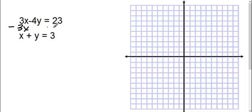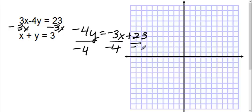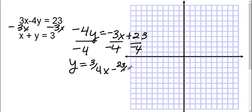So I'm going to subtract 3x on both sides. Therefore, I now have negative 4y equals negative 3x plus 23. And then I'm going to divide everything by negative 4. Therefore, I get y equals 3 fourths x minus 23 over 4.